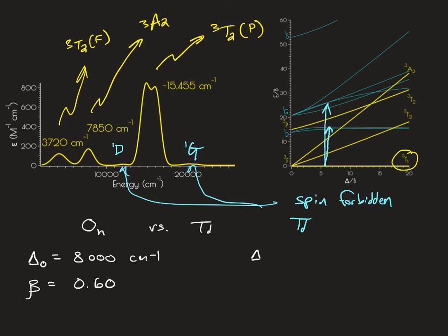In the delta T compound, we have delta T equal to 5,200 wave numbers, and a B value that's about 80% of the free ion term.